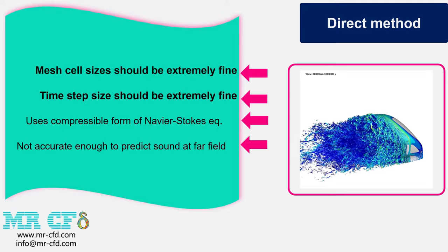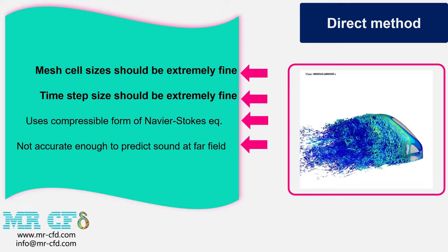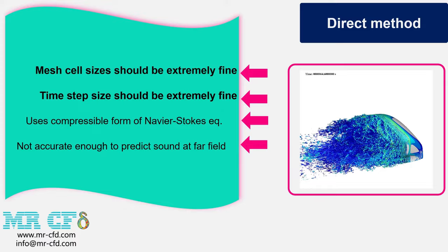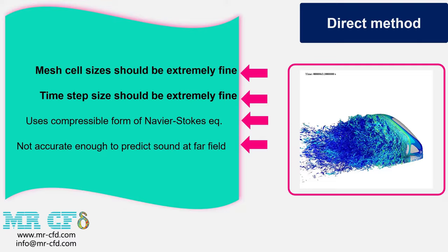The first method mentioned was the direct method. Firstly, in this method, the production and propagation of sound waves are considered as coupled, and secondly, they are obtained directly from solving fluid dynamics equation. In this method, compressible Navier-Stokes equation should be used. Also, this method is not accurate enough to calculate sound waves far away from the sound source.